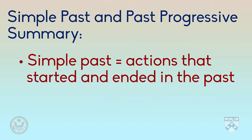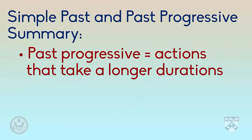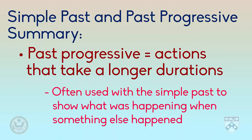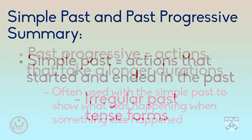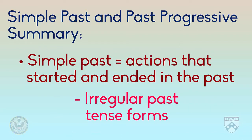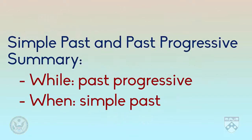To summarize, we've talked about the simple past and the past progressive. Actions that start and end in the past use both forms. Use the past progressive to show what was happening when something else happened. Use the simple past if you are just talking about one event that began and ended in the past. Also, remember to study those irregular forms. Lastly, we talked about how to use both forms together while using either 'while' or 'when.' Check your understanding with the next game, and check the bonus materials for a game using irregular past tense verbs.